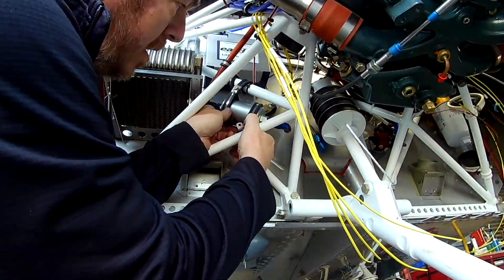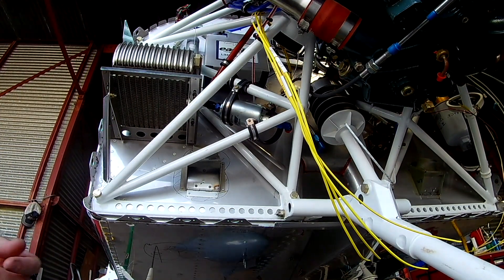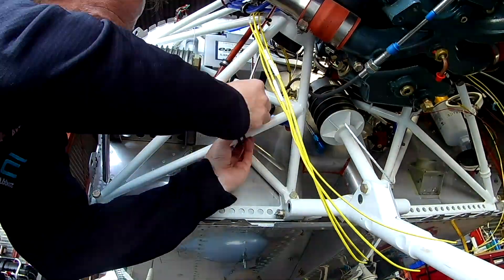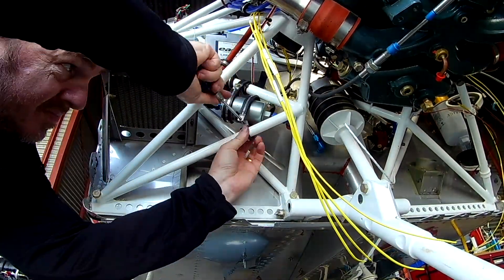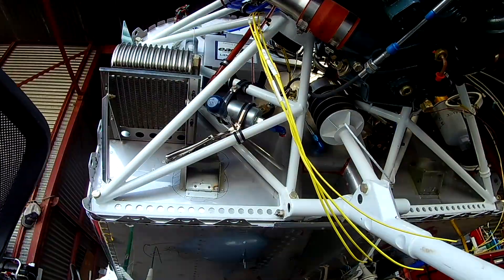But on this side of the firewall, I want to make sure there's no nylock anything—all metal. So I've got AN3 bolts combined with jet nuts, or MS21043, something like that.